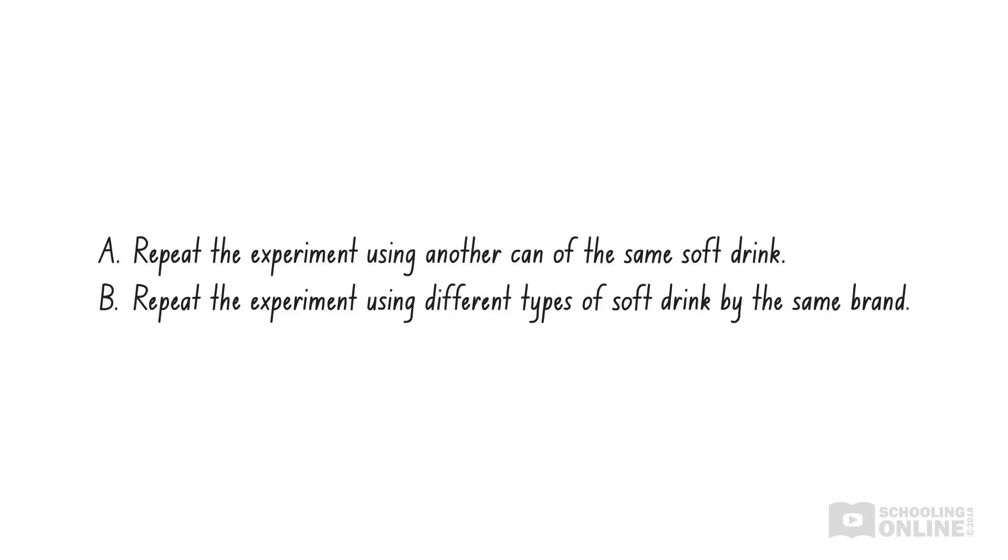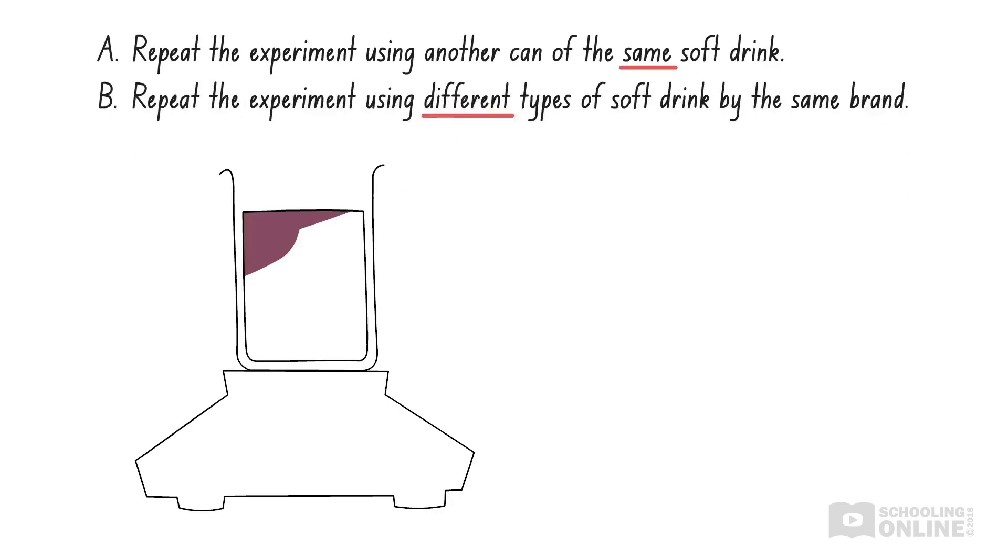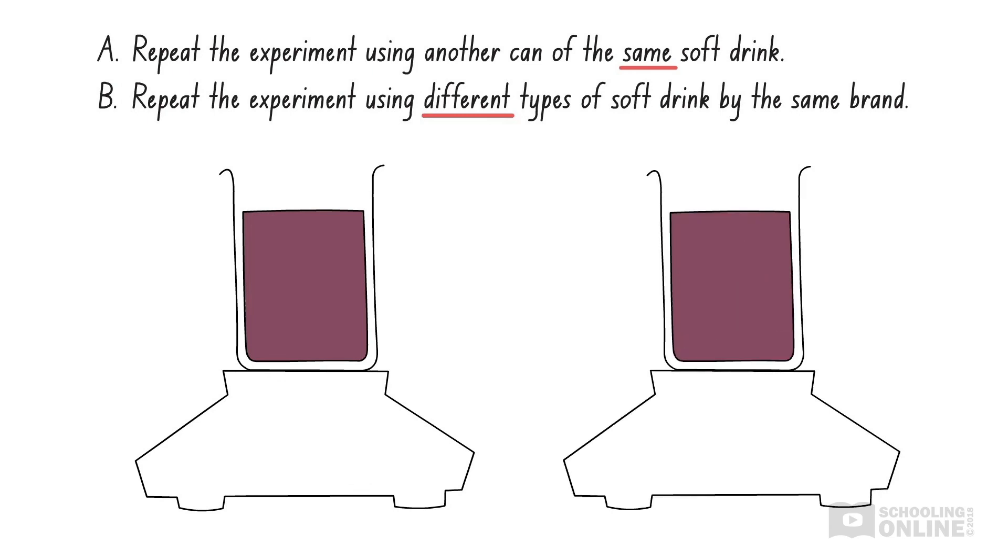Now, we are left with two options. Option A says Marie should repeat the experiment with the same soft drink. Meanwhile, option B says she should repeat the experiment using different soft drinks. When we repeat our experiment to improve reliability, we should follow the same experimental procedure each time. Therefore, Marie should continue to analyse the same soft drink. If she does this, she can check if the mass of sugar in this soft drink is the same every time.